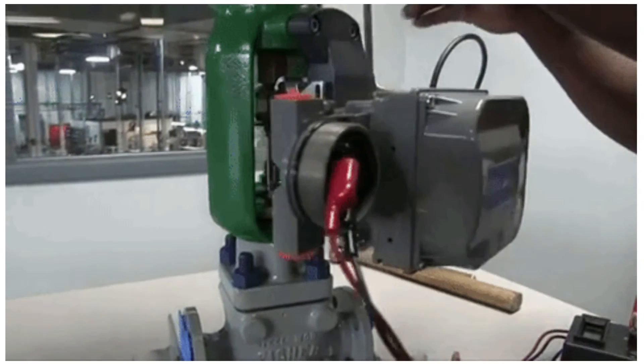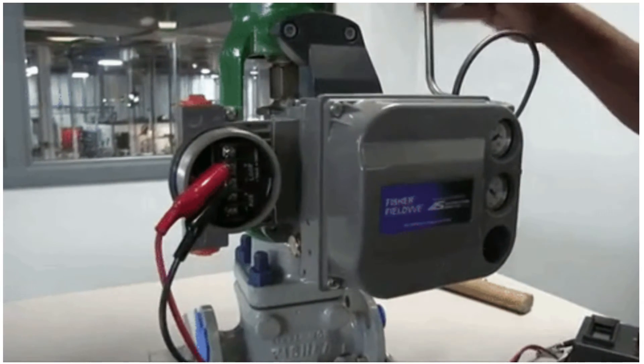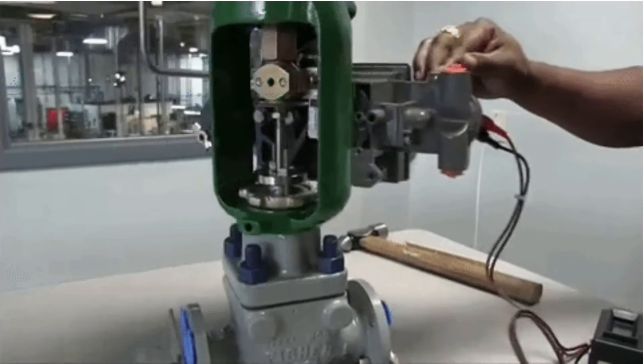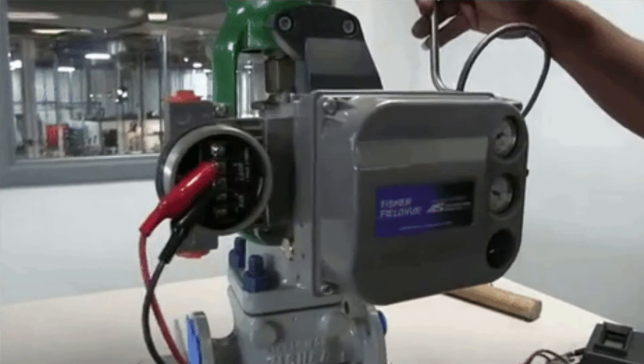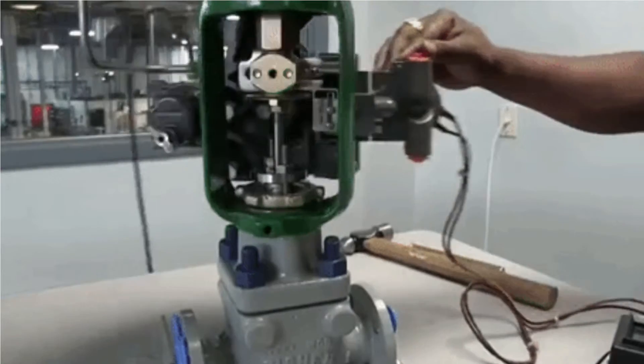Positioners are devices that help the control valve for positioning its actuator with the help of a control signal. Positioners would act according to the input signal it receives, and this device would receive the signal either pneumatically or electrically.